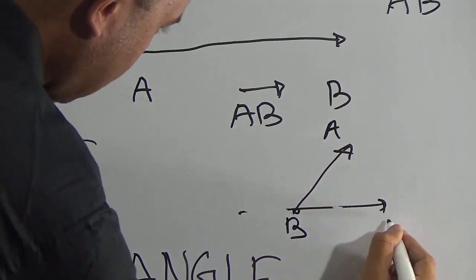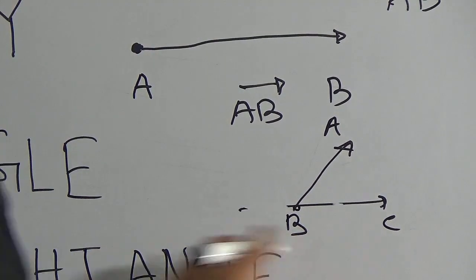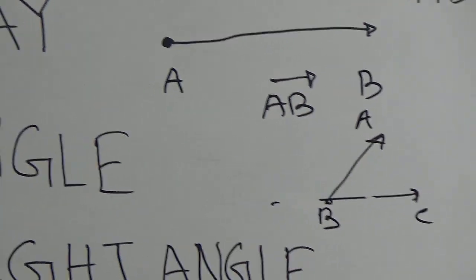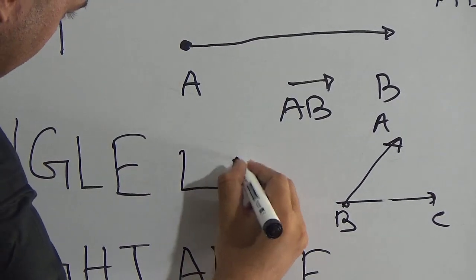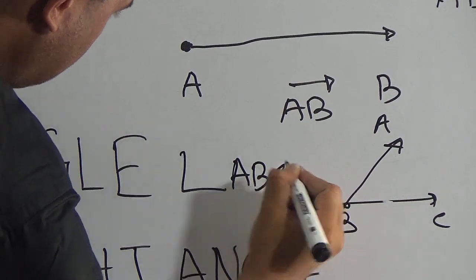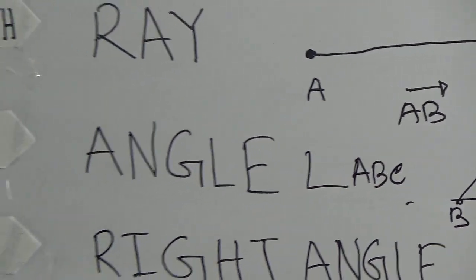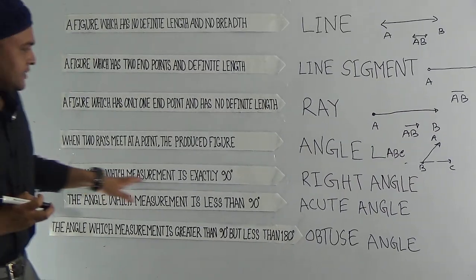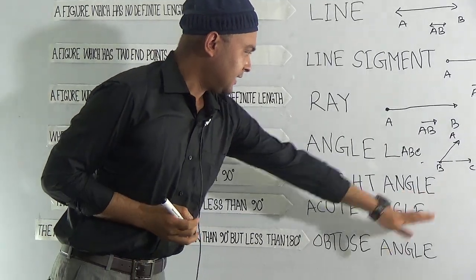This is the angle. If we consider there is A, B, and C, then this is angle ABC. We can say angle ABC. Next, we can consider right angle.